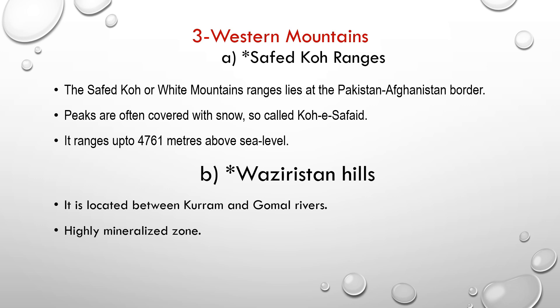Next is Waziristan Hills. Why do we call it 'hills' and not 'mountains'? The difference is that mountains are higher in height than hills — hills are shorter in height compared to mountains. Waziristan Hills are located between the Kurram and Gomal rivers and are a highly mineralized zone, meaning many minerals can be found here.